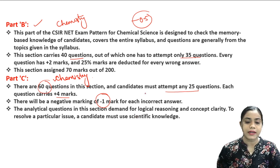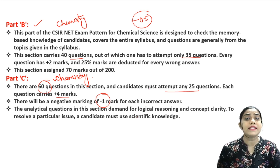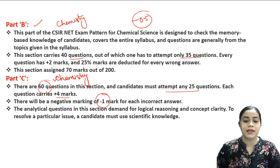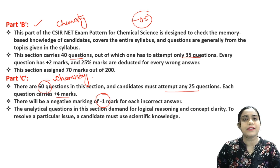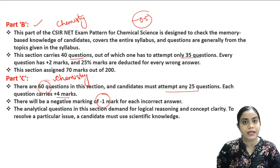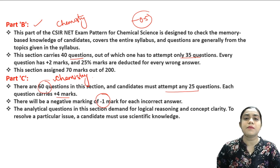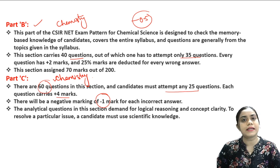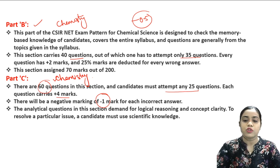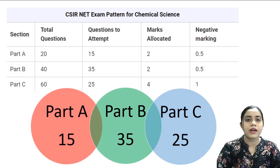Part B consists of theoretical and scientific awareness questions, as well as theoretical and practical questions. Part C involves conceptual, theoretical, and practical questions related to chemical science only. Part A is the only section related to general aptitude.